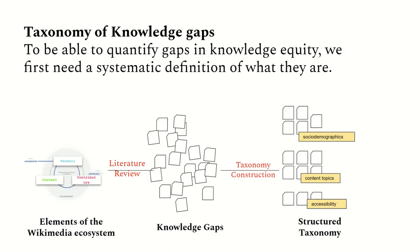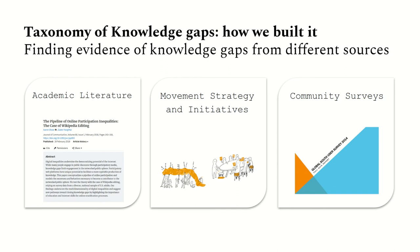Next, we had to populate the taxonomy. For each of the root dimensions — readers, content, and contributors — we did a thorough literature review to find elements of the Wikimedia ecosystem having evidence of knowledge inequity and identified those as knowledge gaps. We then organized those gaps in a structured taxonomy that can be easily consumed and intuitively understood by both technical and non-technical people. In practice, we went through tons and tons of literature to identify those gaps.